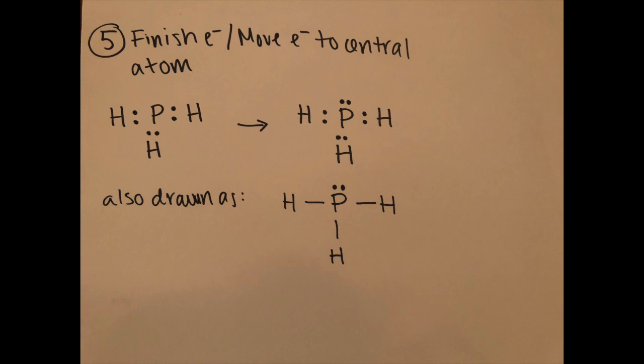And so now step five finish the electrons move them around to the central atom. We still have two electrons that have not been used and phosphorus does not have its octet rule completed. So we're going to add the lone pair on top of phosphorus.